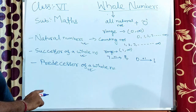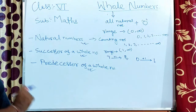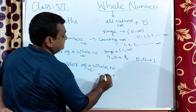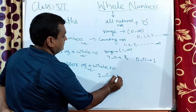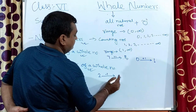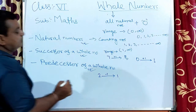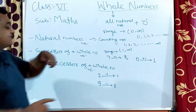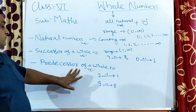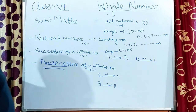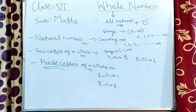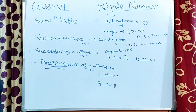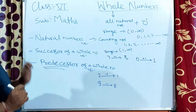Next, predecessor. When we subtract one from a given whole number, we get its predecessor. For example, the predecessor of two is one, because two minus one equals one. Similarly, the predecessor of nine is eight. To find the successor, we add one, and to find the predecessor, we subtract one. Every whole number except zero has its predecessor.